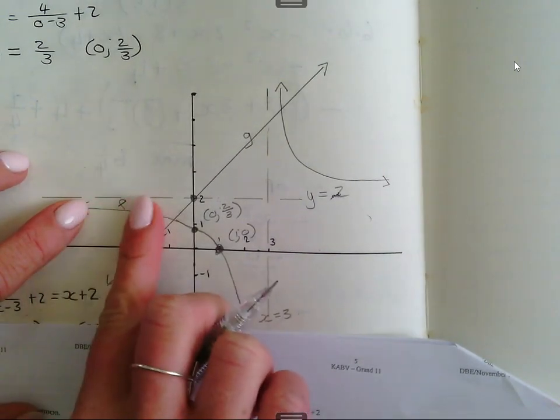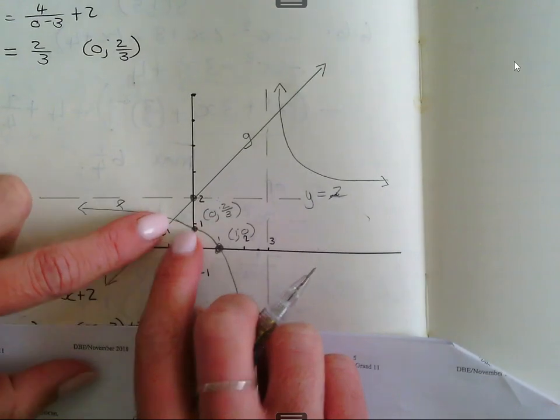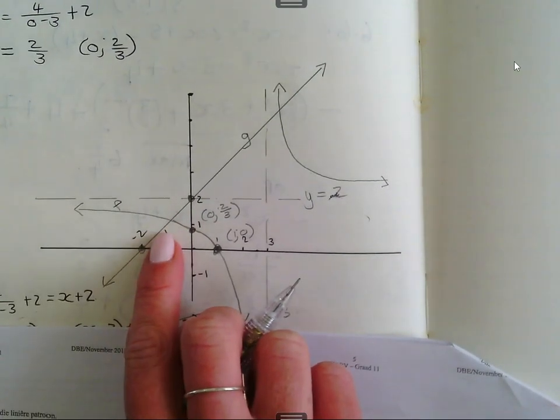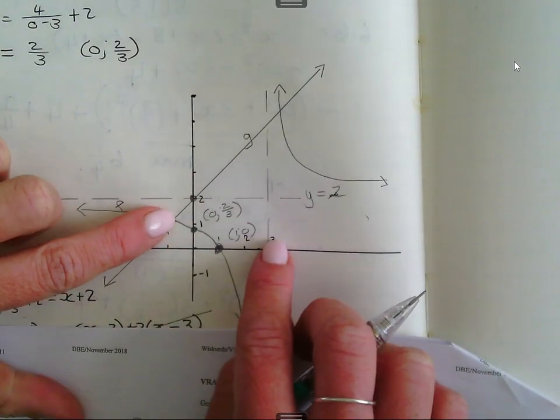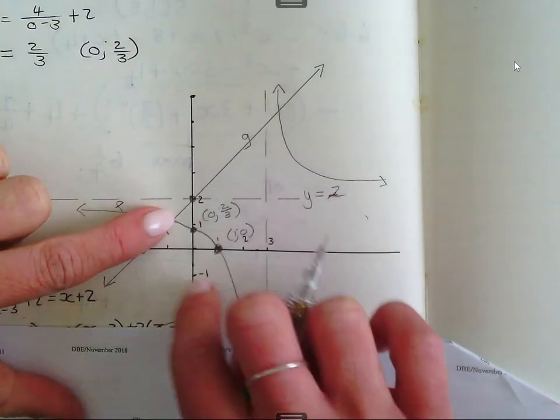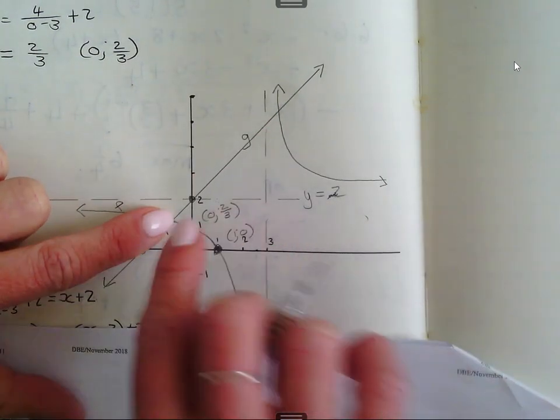Hy bly boem, tot by die punt wat minus 1 is, wat jy nou net bereken het. Dit is ook om jou moes bereken het. Van minus 1 af tot by die asomtoot is die raagheidlijn boe die hyperboek. So dit gaan ons antwoord wees.